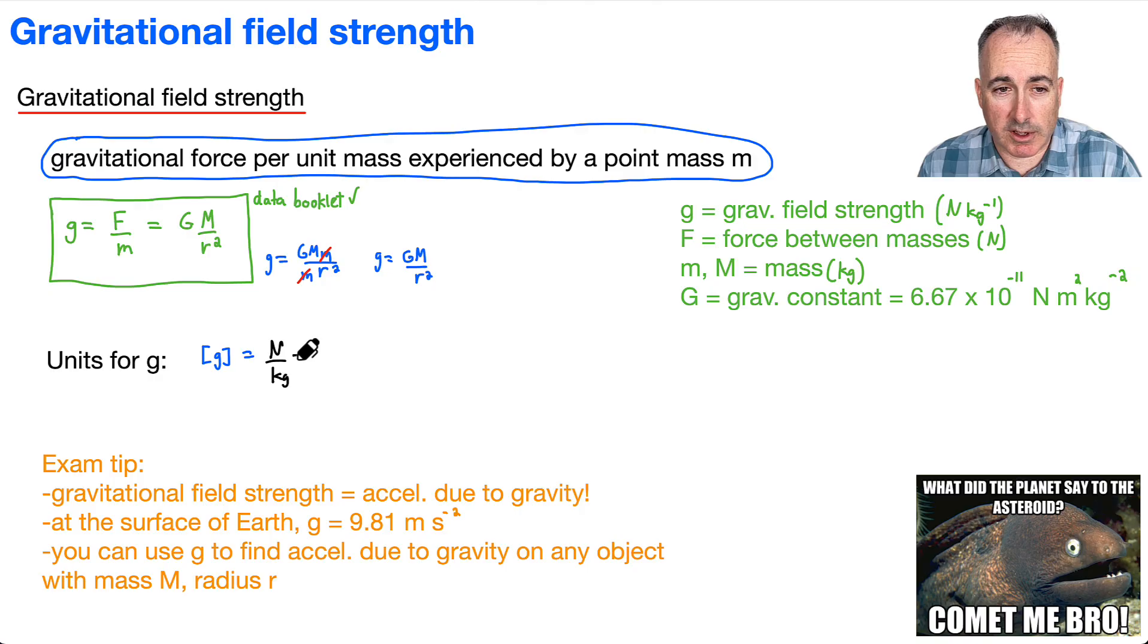I think it would be a good idea to look at the units for g as well. If we've got it in force per mass, then it would be Newtons over kilograms. But if you remember what a Newton is, remember F equals ma? Force is mass times acceleration. So mass has units of kilograms times acceleration, which is meters per second squared. That's Newtons. But I've got to divide by kilograms, so the kilograms cancel out. And lo and behold, I get the units for g equals meters per second squared.